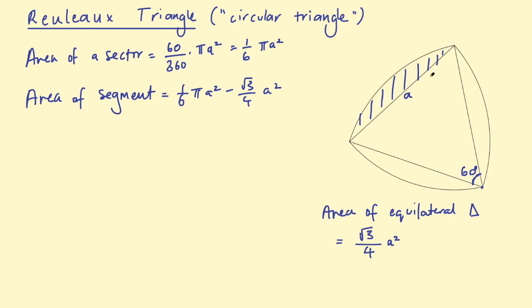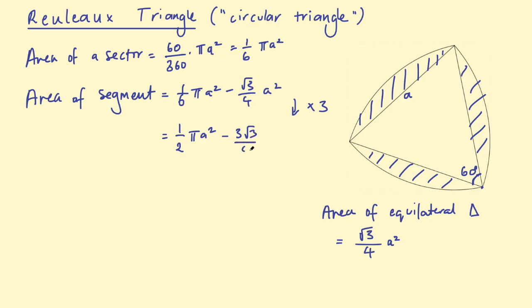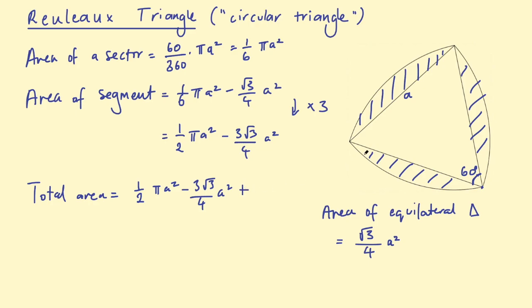That segment is the shaded part shown. In this Reuleaux triangle there are three of those segments, so I multiply that whole thing by 3. Multiplying by 3 gives (3/6)πA² which is (1/2)πA², minus (3√3/4)A². That's the shaded area around the outside. Now I want to add back on the area of the equilateral triangle, so the total area is (1/2)πA² minus (3√3/4)A² plus (√3/4)A².